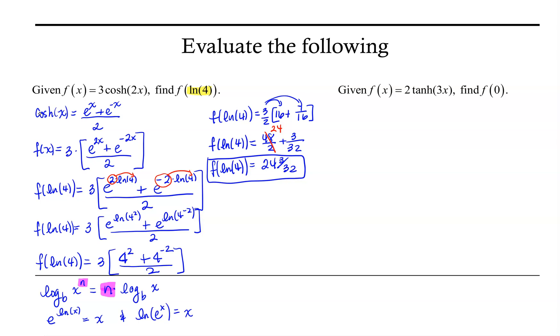Let's take a look at our second example. We have f of x is equal to 2 times tanh of 3x, and what we want to do is find f of 0. Now there's two ways we could approach this. Let's go ahead and for the first strategy, let's think of f of x as 2 times sinh of 3x over cosh of 3x.